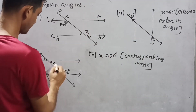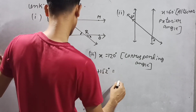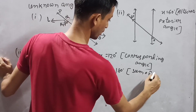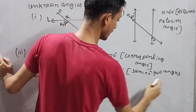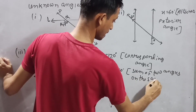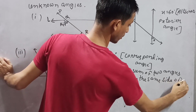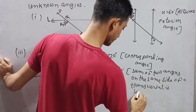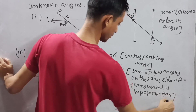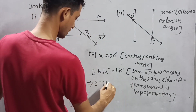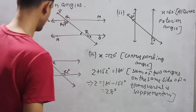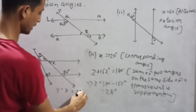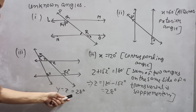Now take angle Z. Z plus 152 degrees equals 180 degrees, because the sum of two co-interior angles on the same side of the transversal is supplementary. So Z equals 180 minus 152, which is 28 degrees. Therefore Y equals Z equals 28 degrees, X is 120 degrees, and Y is 28 degrees.